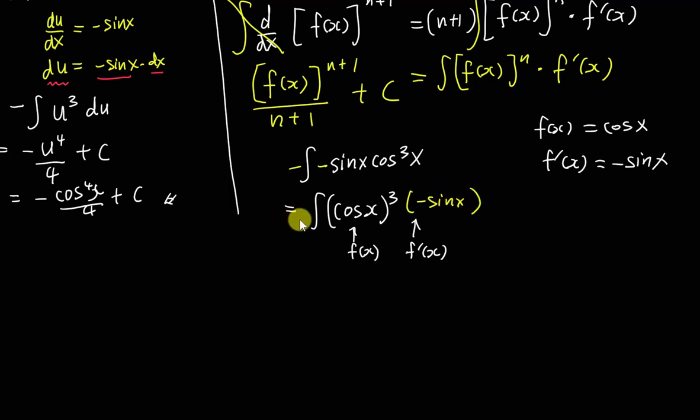Definitely we still have one minus at the front here. So right now it's exactly in this form already. So if I integrate cos³ x and then multiply with the differentiation of cos x, I can straight away get the answer like this.